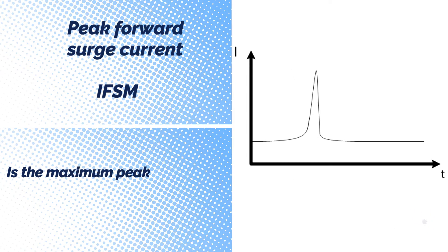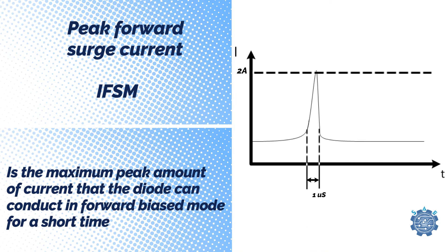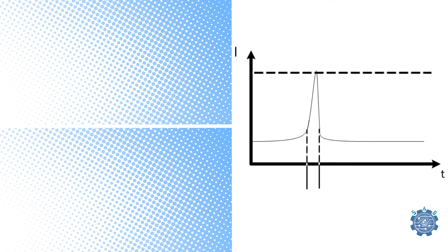Peak Forward Surge Current is the maximum peak amount of current that the diode can conduct in forward bias mode for a short time.